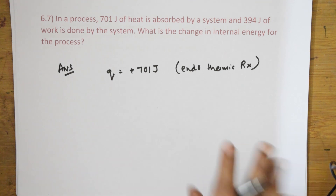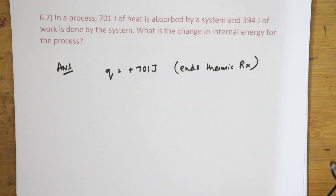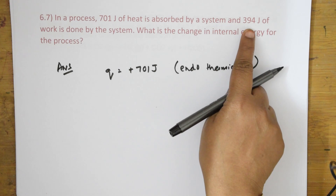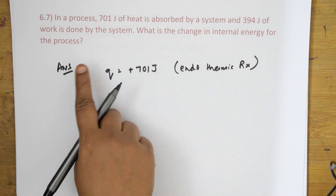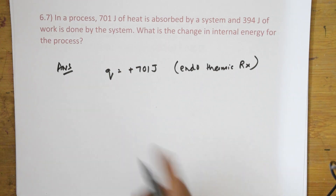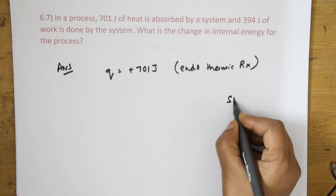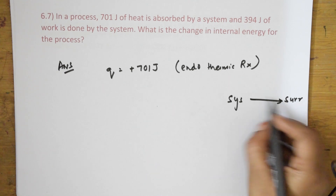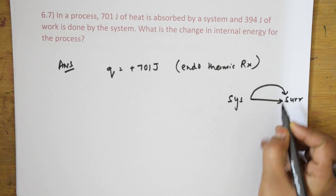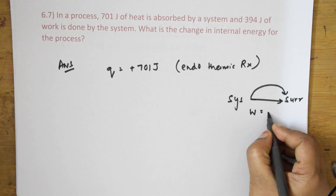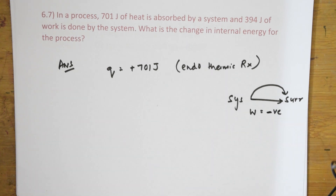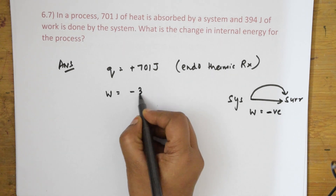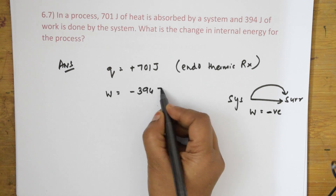q is positive, so it is endothermic. They said 394 joules of work is done by the system. Whenever the system does work on the surroundings, w is always negative. So the work done w = −394 joules.